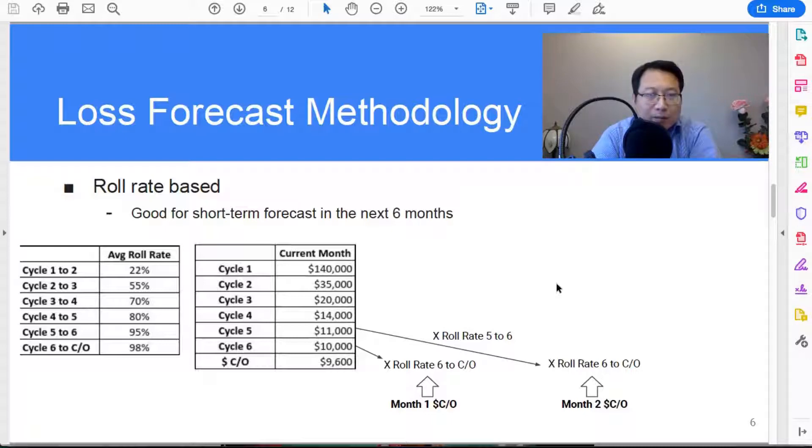You can see that from cycle one to two is in the twenties. As the account moves through delinquent cycle, the roll rate naturally becomes higher and higher. In the last stage from cycle six to charge off, that's almost 100 percent, right, 98 percent.